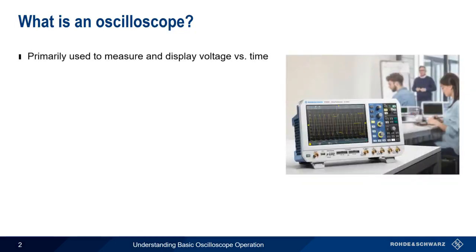Let's start by explaining what an oscilloscope is and how it's used. The main purpose of an oscilloscope is to measure and display voltage versus time.